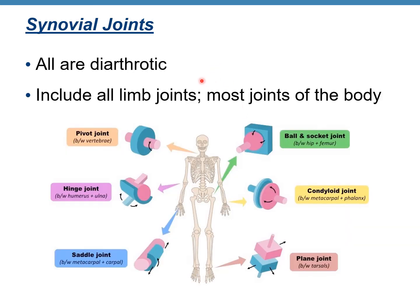The last group of joints based on structure are synovial joints. Synovial joints are all diarthrodic — freely movable — and include all limb joints, most joints of the body. You can see here on this diagram that synovial joints include pivot, hinge, saddle, plane, condyloid, and ball-and-socket joints. Synovial is based on their structure, and diarthrodic means freely movable — based on function or degree of movement.